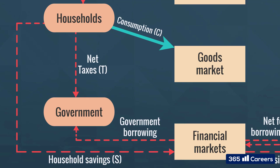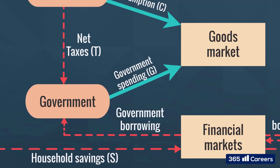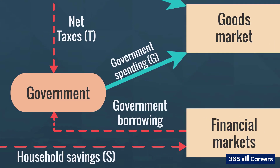Governments' net income consists of taxes received from households less the spending governments make on the market for final goods and services. G stands for government spending. In the case of any shortage of funds, governments borrow from the financial markets.